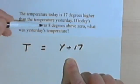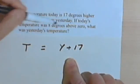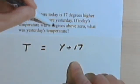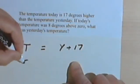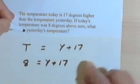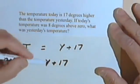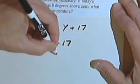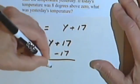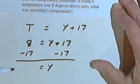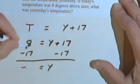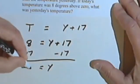I've also got more information. Today's temperature was 8 degrees above zero. Well, that's good. So instead of the T for today, I can put in an 8, 8 equals Y plus 17. And it wants me to find yesterday's temperature. So I'll subtract 17 from both sides. That means I've got my Y all by itself on the right side, which is fine. And I've got 8 minus 17. That'll be a negative number, and 8 minus 17 is going to be negative 9.